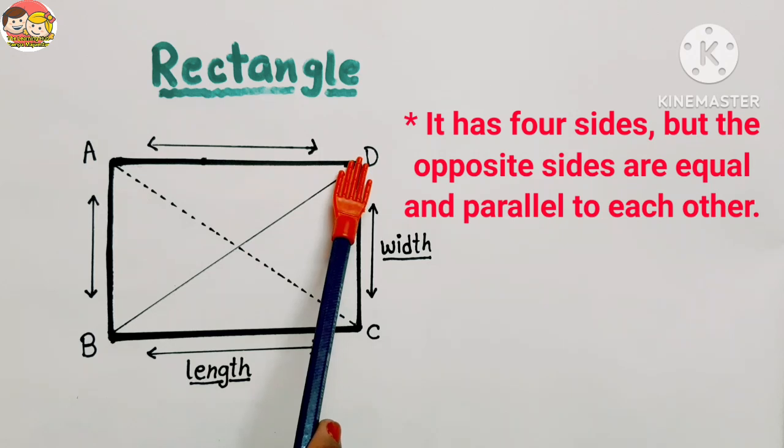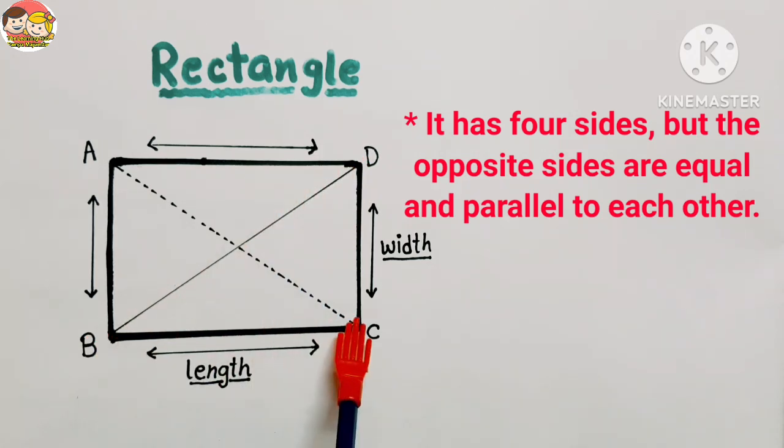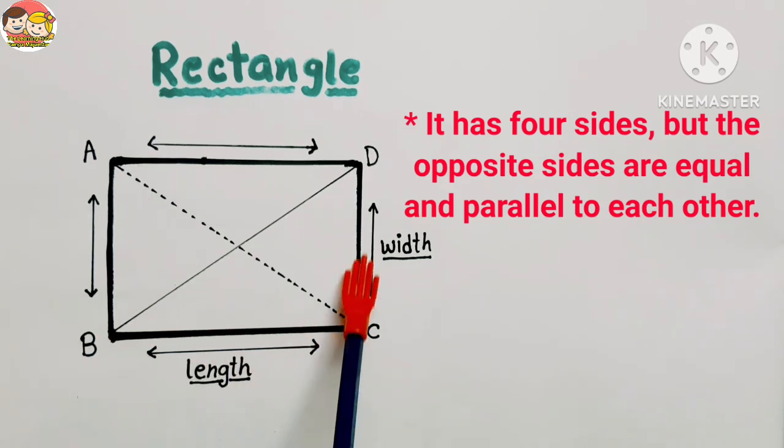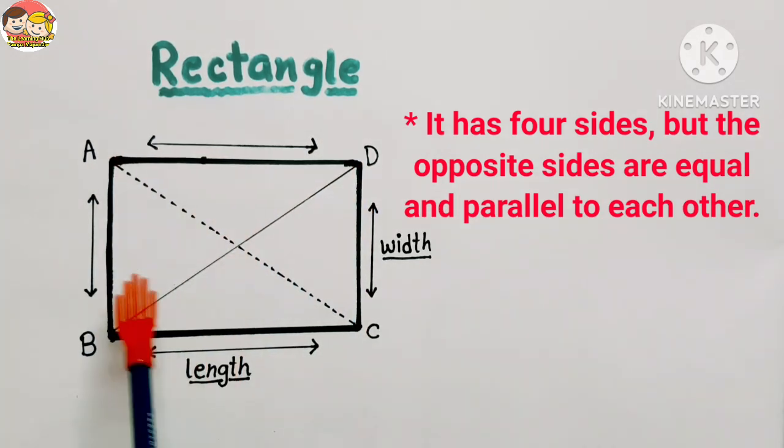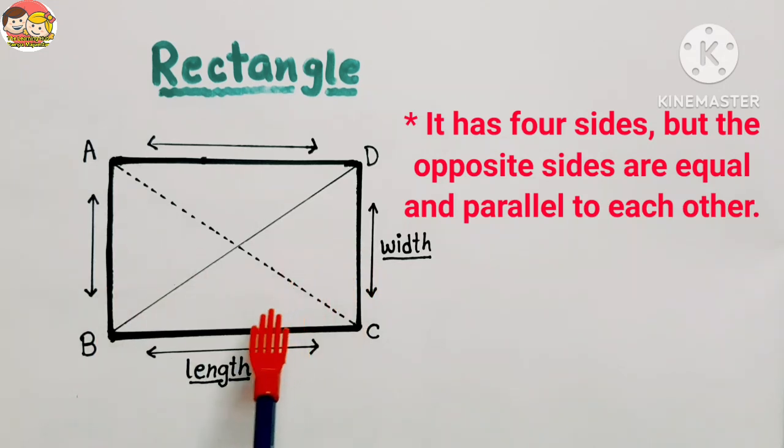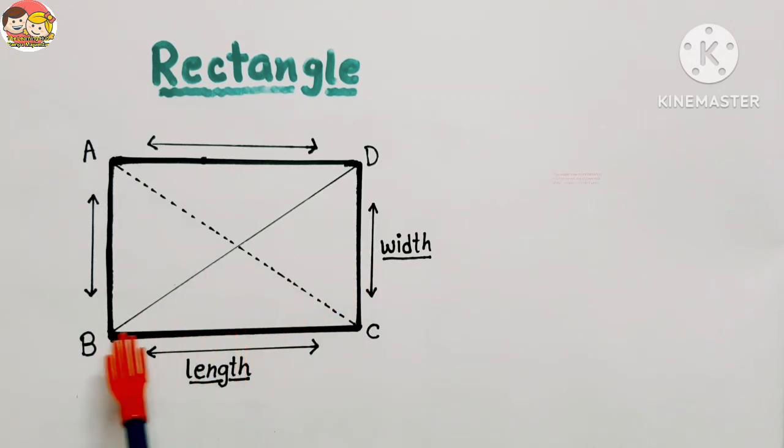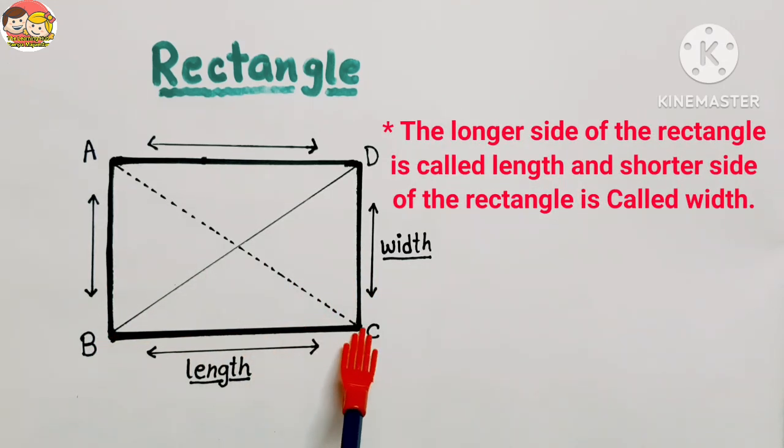But the opposite sides are equal and parallel to each other. Like here, AD is equal to BC. So a rectangle has four sides: one, two, three, four.